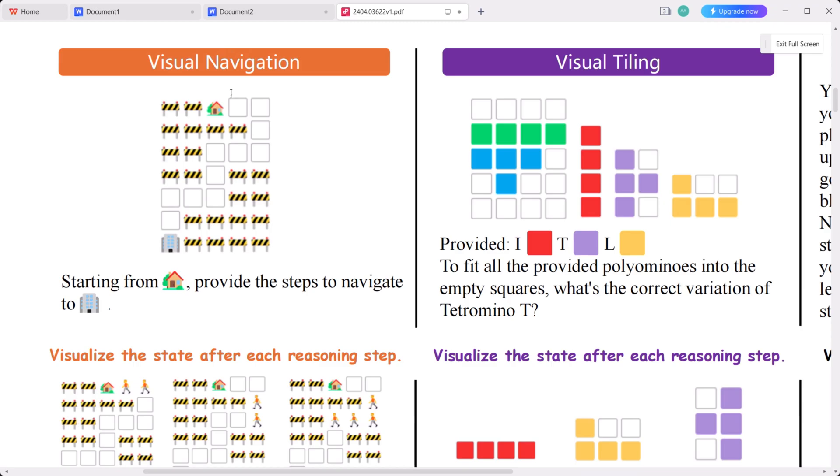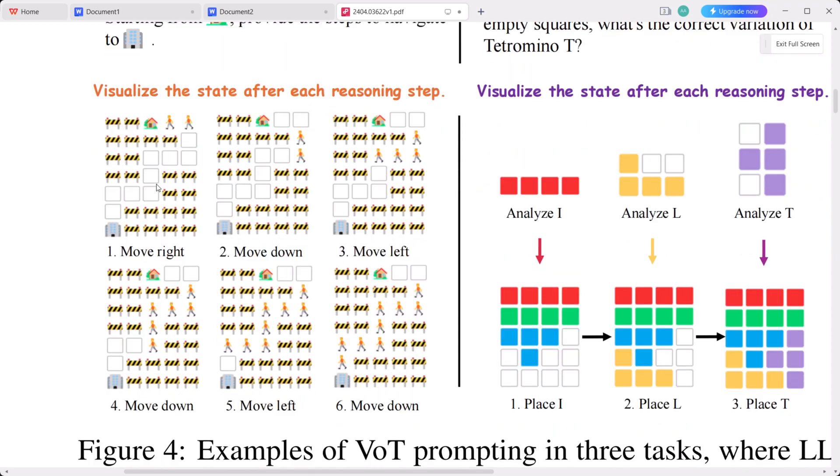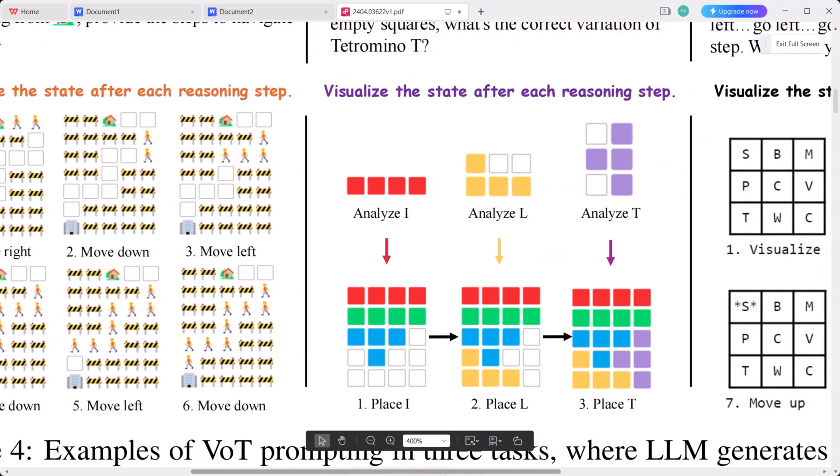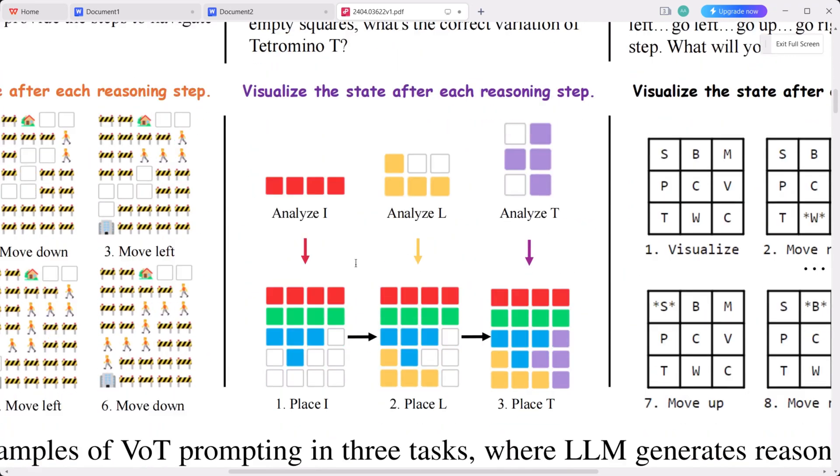Let's focus first on the example to the left. This represents visual navigation, which we've previously discussed. Here we have a house, and the task for the large language model is to navigate through the empty squares to reach the office, avoiding any squares with gates as they are impassable. Here we see the LLM performing the task step-by-step. First, it moves right, then down, followed by left, down, left, and down again, successfully reaching the destination. This process is similar to visual tiling, where the model is presented with a grid and three different objects resembling Tetris pieces. The model assesses where each piece can be placed, effectively fitting all the pieces into the grid.